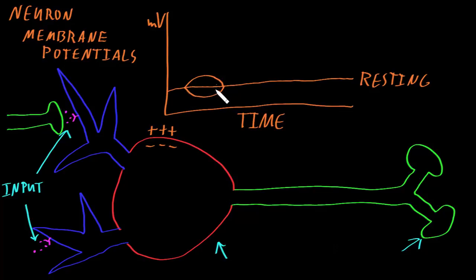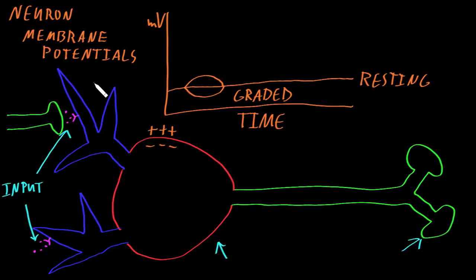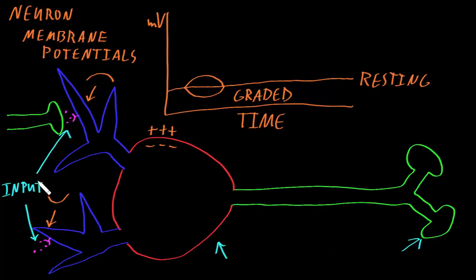We call these kinds of membrane potential changes graded potentials — graded because they can be graduated; there can be different strengths. Graded potentials are usually small in size, brief in duration, and they usually travel just short distances from where that input information comes in. For example, one input cell might cause a brief change in the membrane potential in one direction, while another input might have the opposite effect on a different piece of membrane. The size and duration of a graded potential is usually proportional to the size and duration of the input information coming into that piece of membrane.